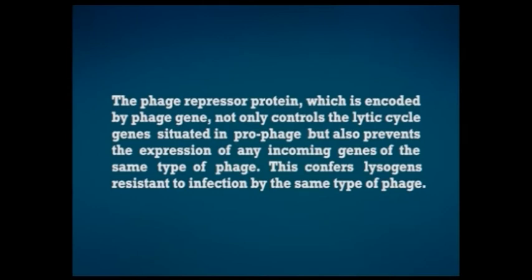The phage repressor protein, encoded by the phage gene, not only controls the lytic cycle genes situated in the prophage, but also prevents the expression of any incoming genes of the same type of phage. This confers on the lysogen resistance to infection by the same type of phage.